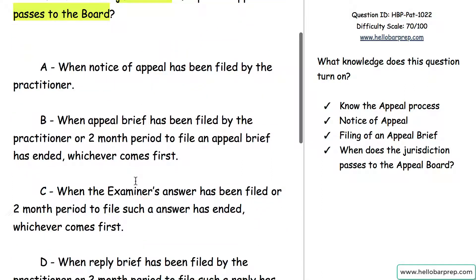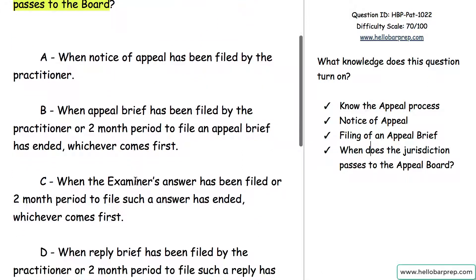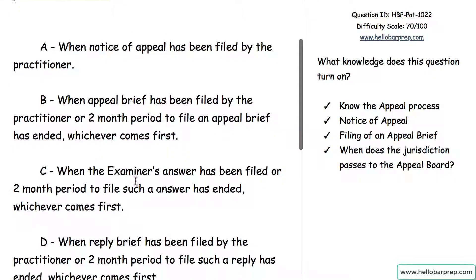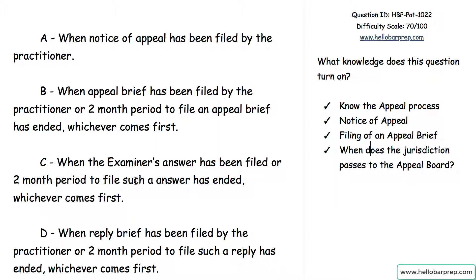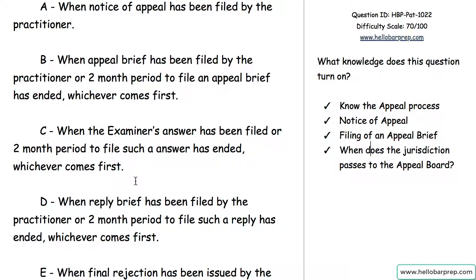Let's look at the answer choices. Option A: when notice of appeal has been filed — no, that's how the appeal process begins. Option B: when the appeal brief has been filed by the practitioner, or the two-month period to file an appeal brief has passed — no. You file the notice of appeal, then you file the appeal brief within two months, extendable by five more months, but that does not turn over jurisdiction to the patent board. So that's incorrect.